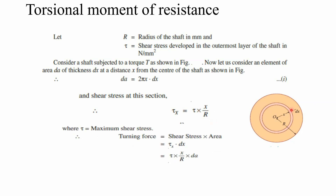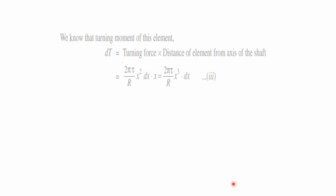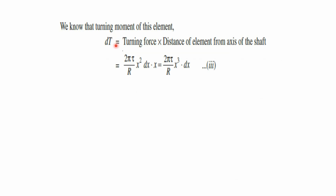Here tau is the maximum shear stress intensity at the outermost layer. The turning force, which is the force tangential to the circumference at that element, equals shear stress times area: tau_x × dA. Substituting tau_x = tau·x/R and dA = 2π·x·dx, the turning force equals 2π·tau/R × x²·dx. The turning moment for this element equals turning force times the distance from the axis, so the elemental moment dT = 2π·tau/R × x³·dx.